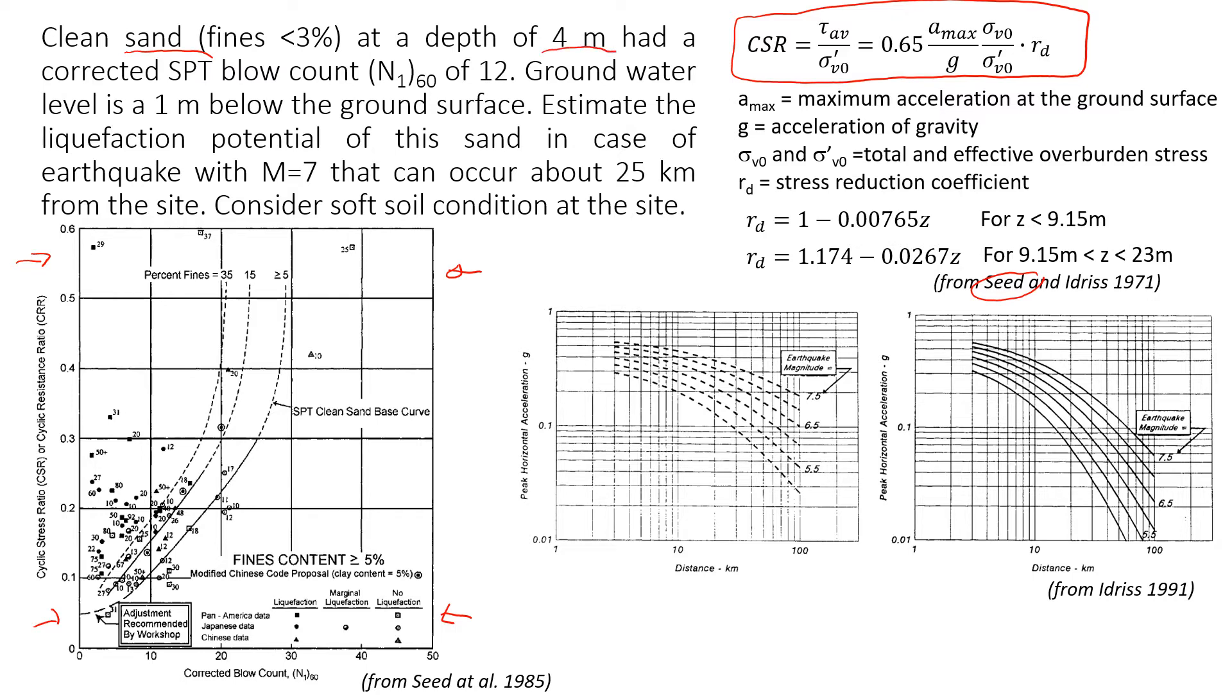When SPT test was performed and correlated to the energy of hammer and to the overburden pressure, this N160 was 12. Also, during site investigation it was found that the groundwater level was one meter below the ground surface, so it was pretty high. Let's estimate the liquefaction potential of this sand.